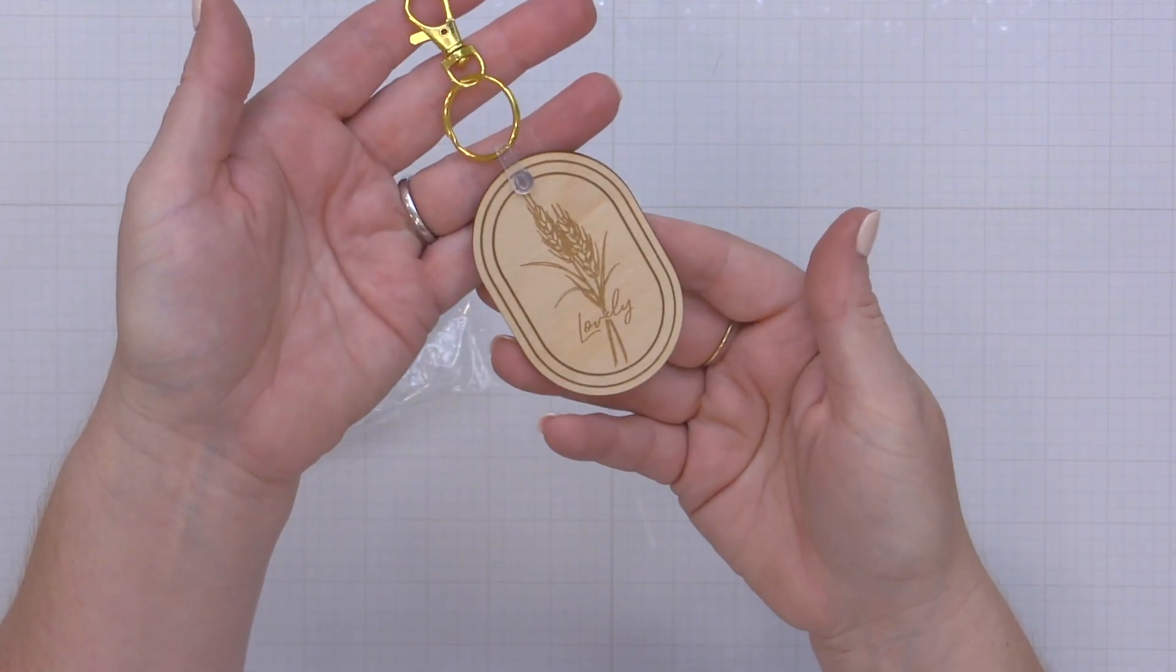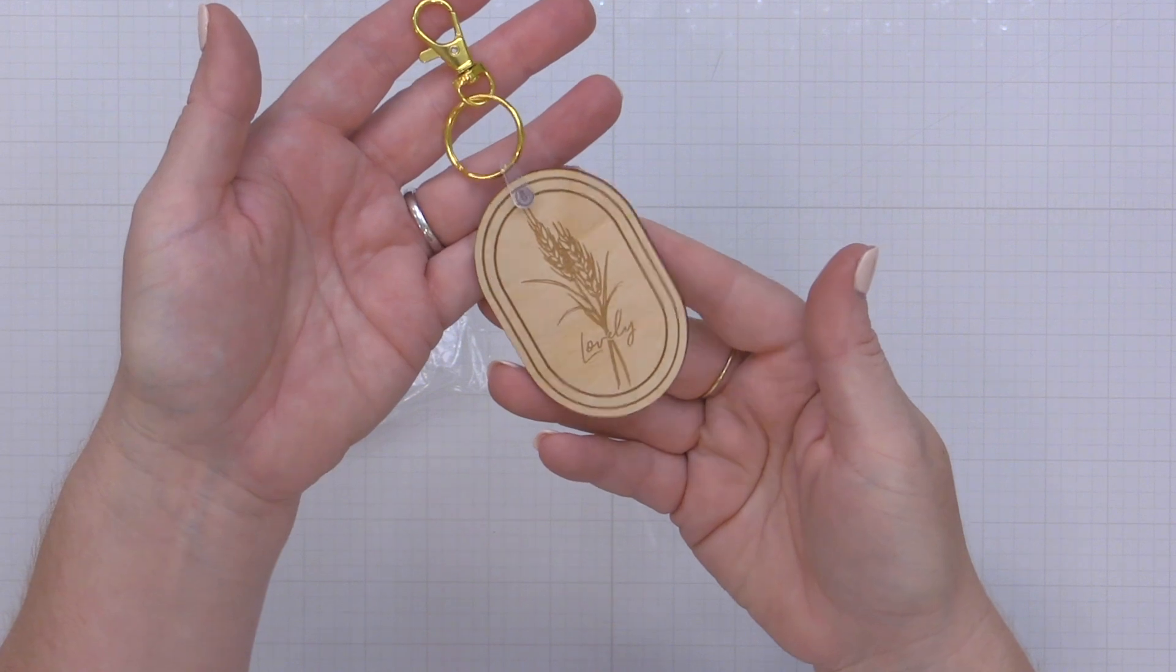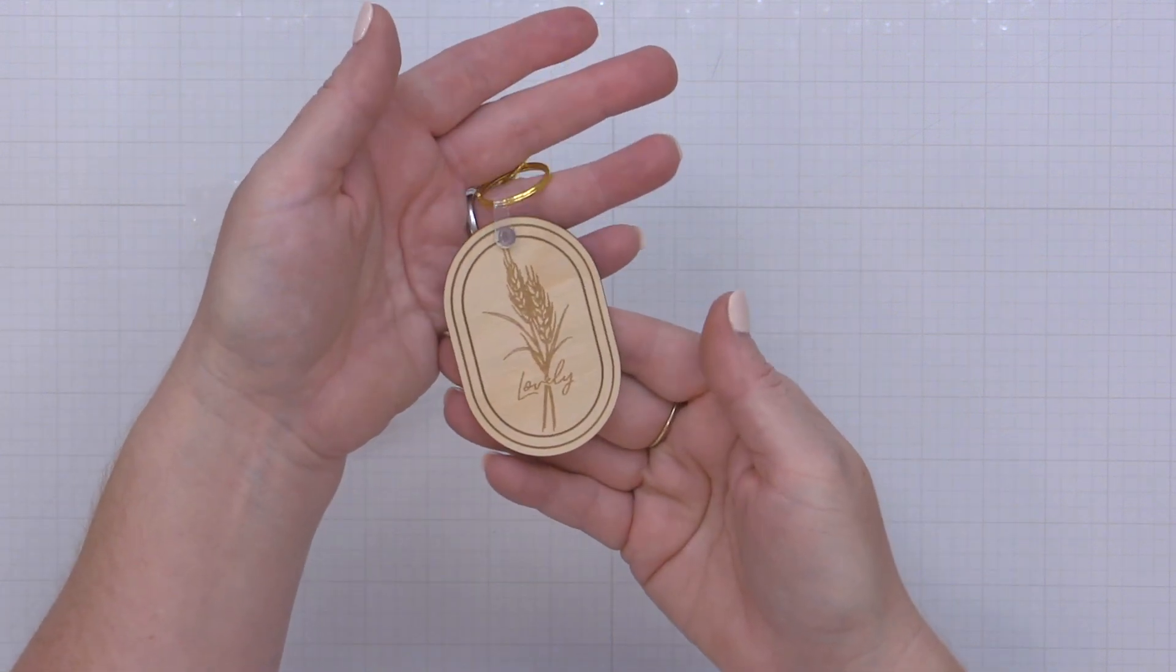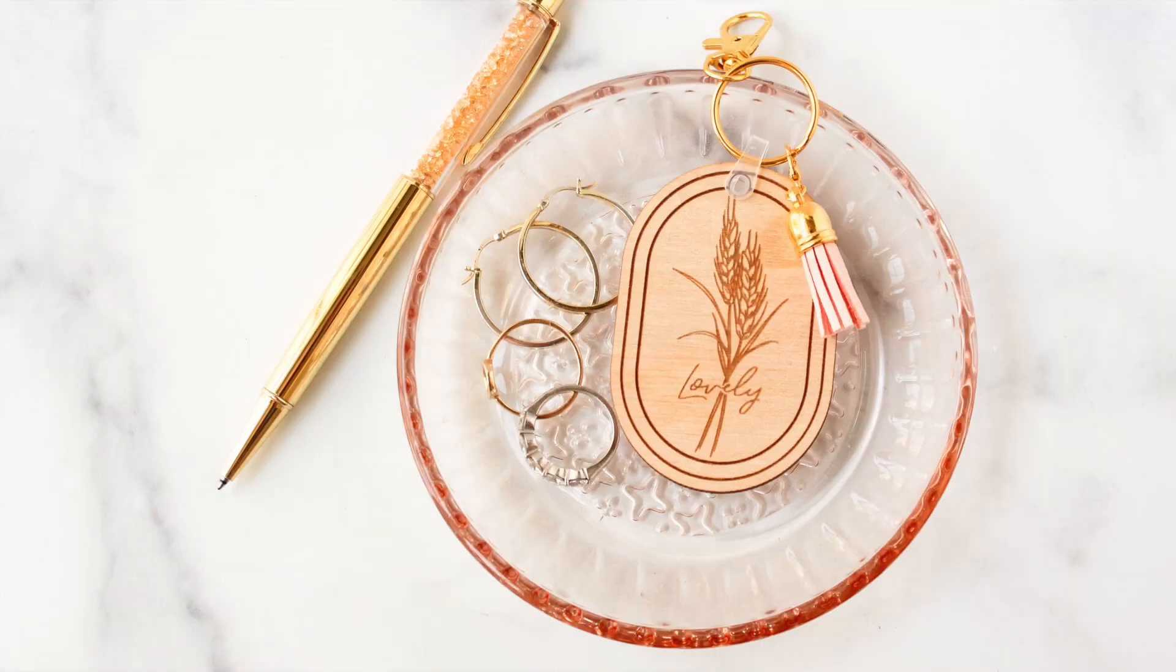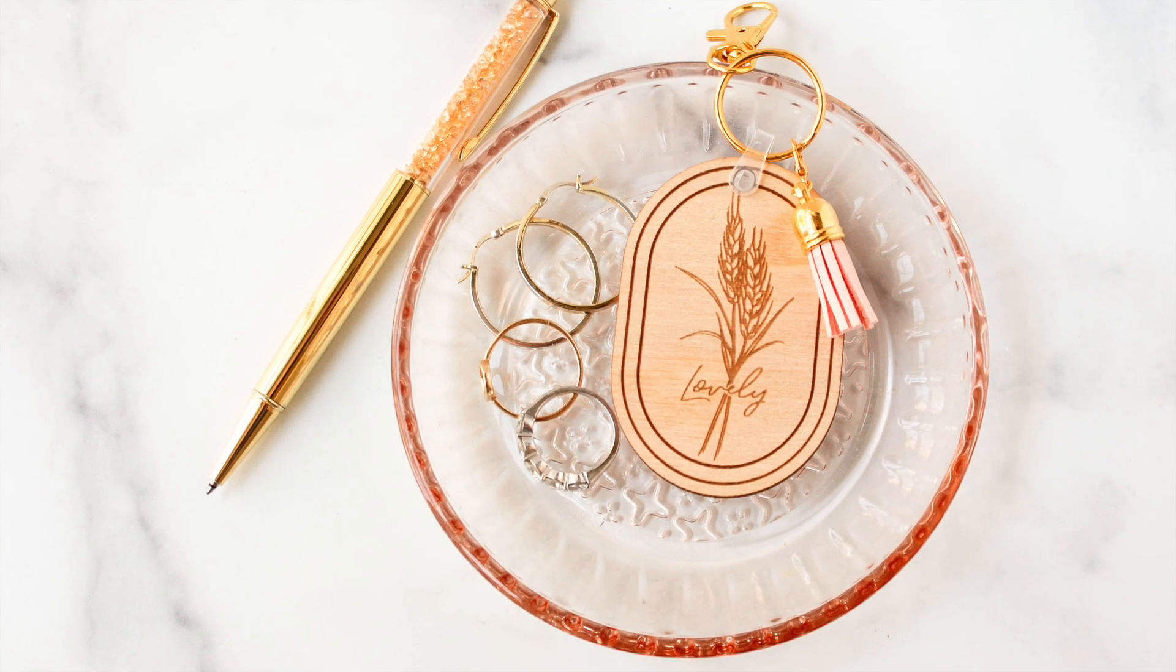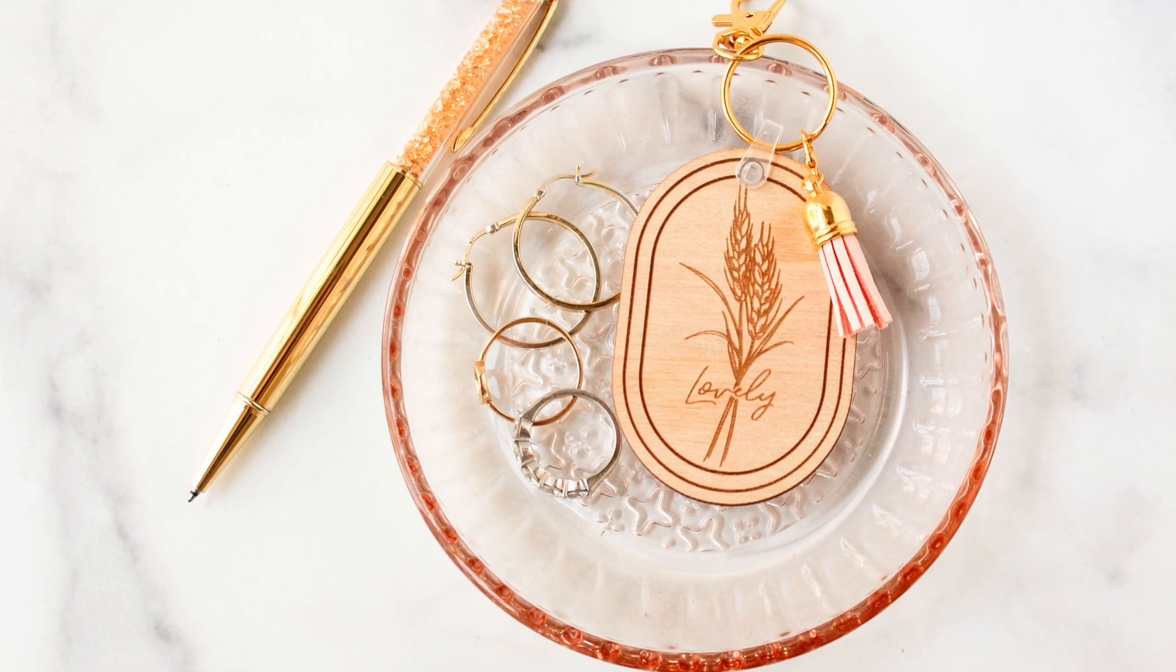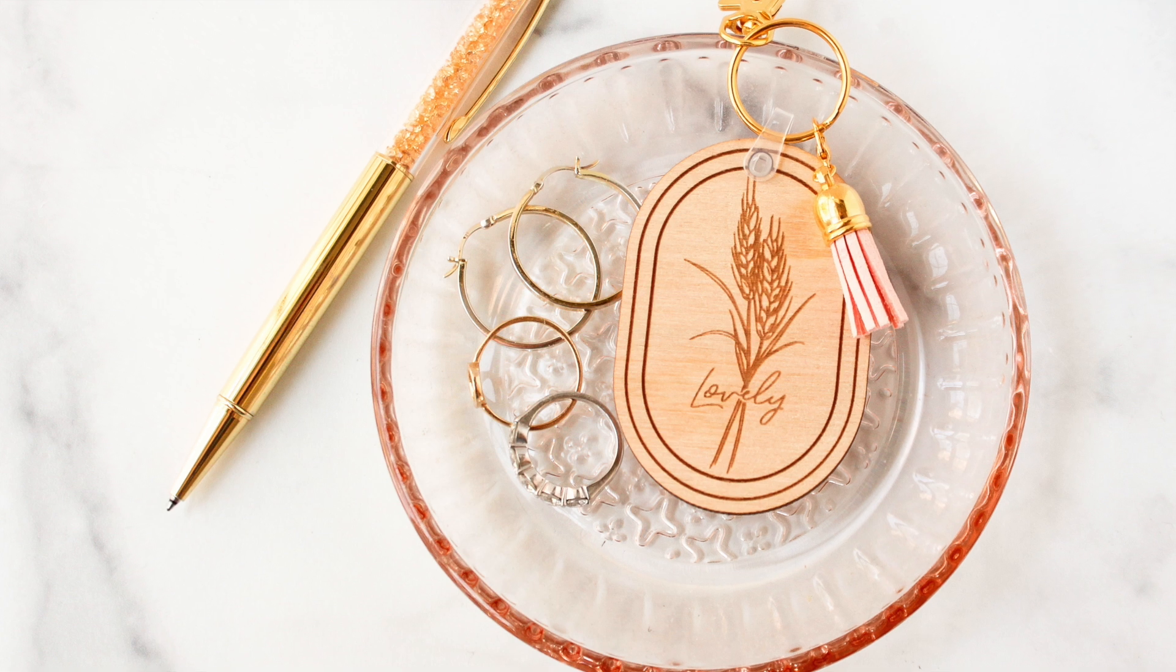There you have it, a laser cut and engraved keychain in seven simple steps, well eight if you stick around to watch in awe. I hope you enjoyed this step-by-step tutorial on how to cut and engrave with your Mira 9 red line and I hope you found this helpful.